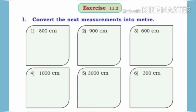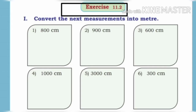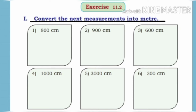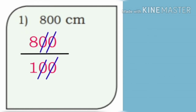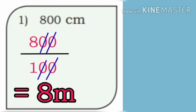Let us solve exercise 11.2. Convert the following measurements into meter. First one: 800 centimeter. Let us divide 800 by 100. Cancel the zeros on numerator and denominator. We get the answer as 8 meter.